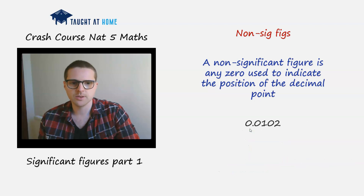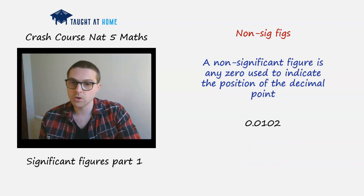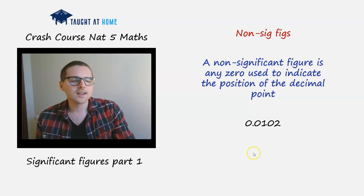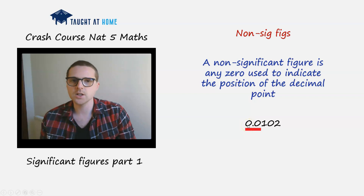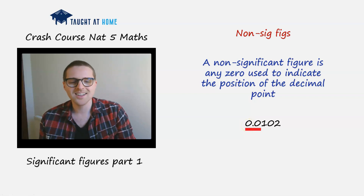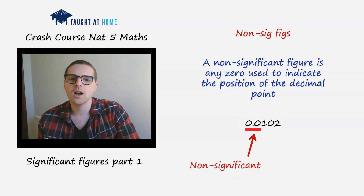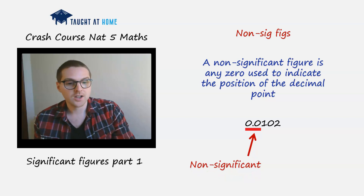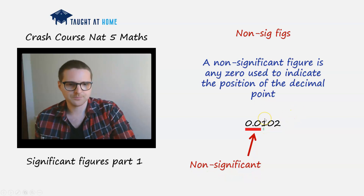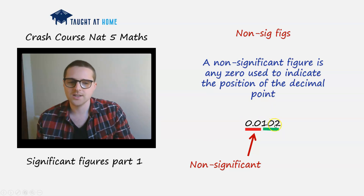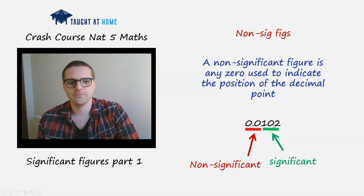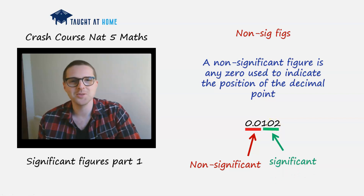Next example: 0.0102. The decimal point sits between two zeros. Those two leading zeros tell us where the decimal point needs to be, so they are non-significant. The remaining three digits — 1, 0, 2 — are all significant. The zero in the middle is significant because it is between two non-zero numbers.